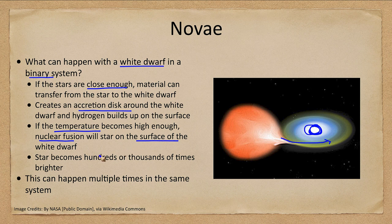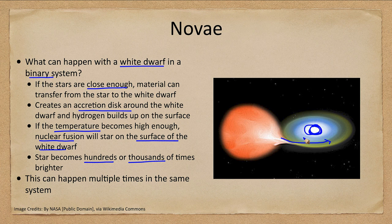So instead of nuclear fusion at the center of a star, here we have it happening on the surface, and the star will suddenly become hundreds or even thousands of times brighter. This does not hurt the white dwarf star — it'll give off a burst of energy and become a lot brighter, and then it will begin accreting material again. So this can happen multiple times in the same system, as long as material is being transferred from one star to another. A nova can be recurring.